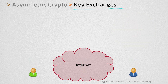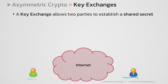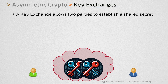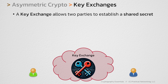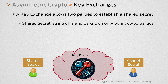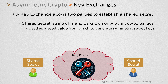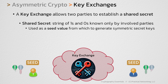A key exchange allows these two users to establish a shared secret over an unsecured medium, like the internet. The key exchange itself will have both of these users exchanging certain pieces of information with each other, and the result of that will be what's known as a shared secret. The shared secret is just a string of ones and zeros known only by the intended parties, and that shared secret will be used as the seed value from which to generate as many symmetric secret keys as we need.